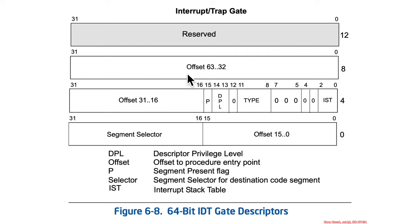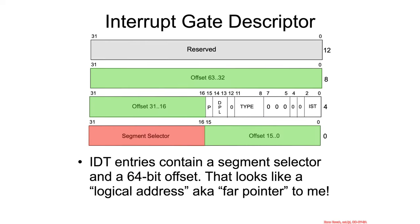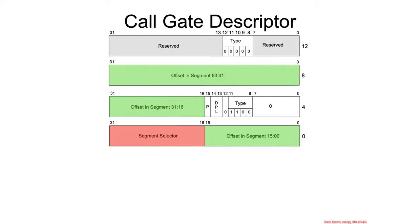So this is the format of the interrupt or trap gate, and it should look very familiar to you because it looks very similar to other types of descriptors that we saw in the GDT. If we squint our eyes, we can see it's got a segment selector and a 64-bit offset, so that should look like a logical address or a far pointer to you — beyond which it looks very similar to another gate that we've seen before: a call gate.